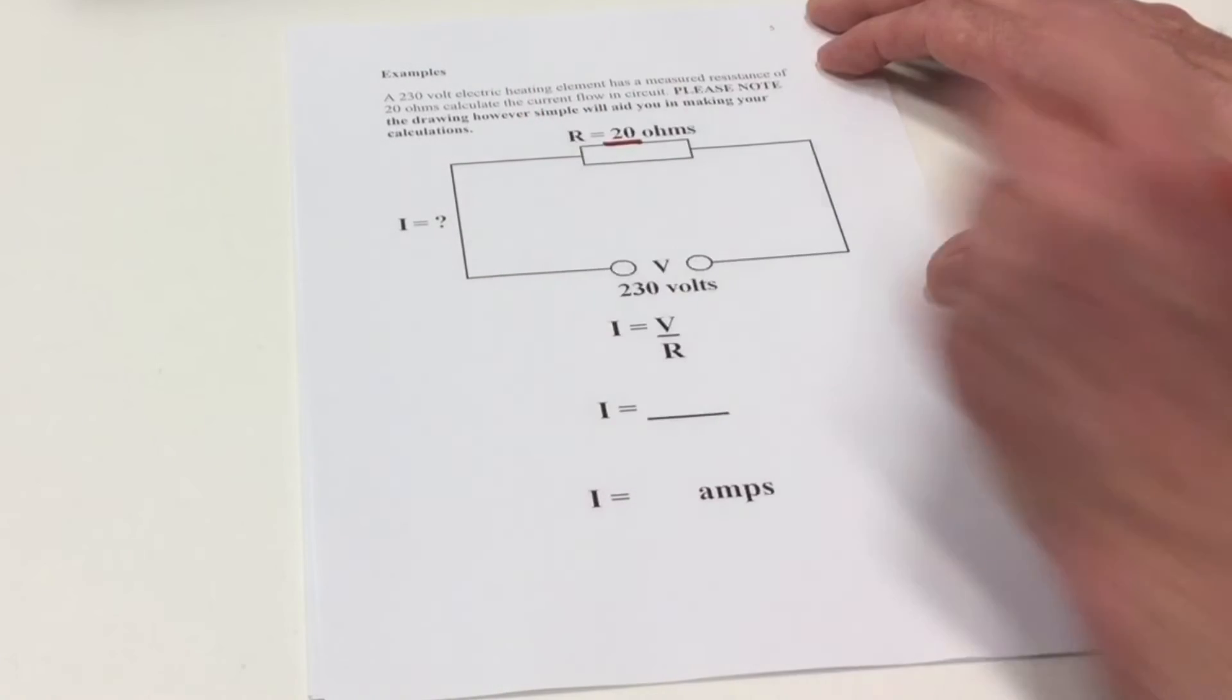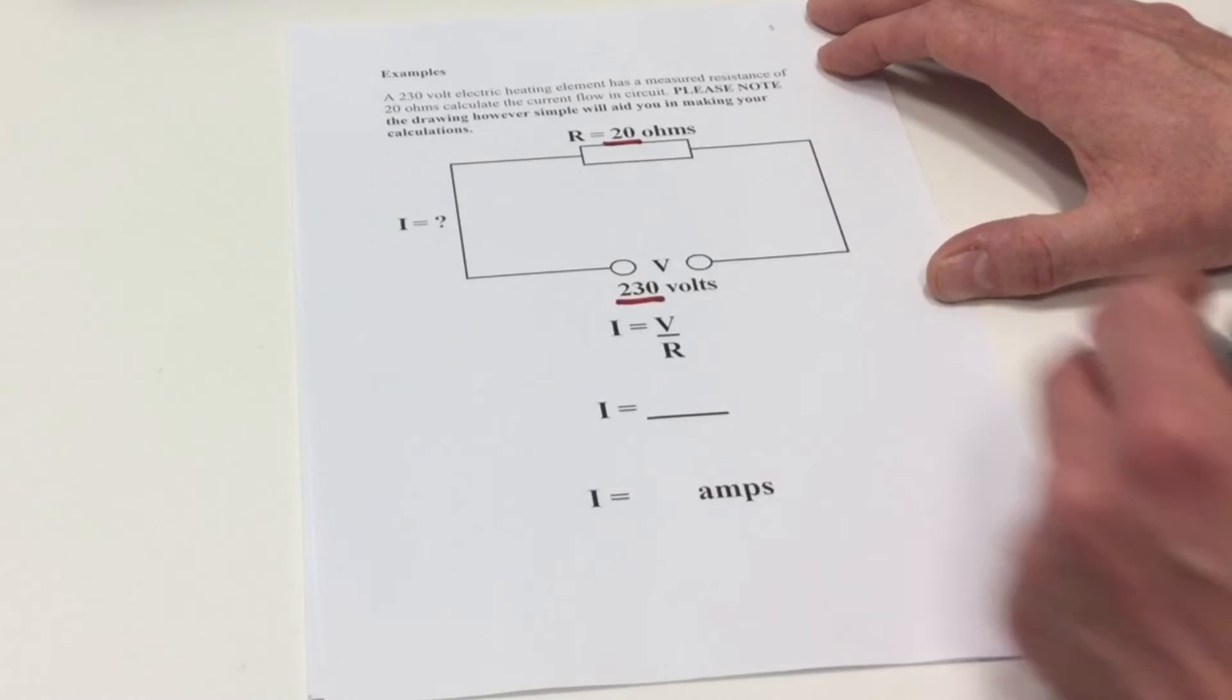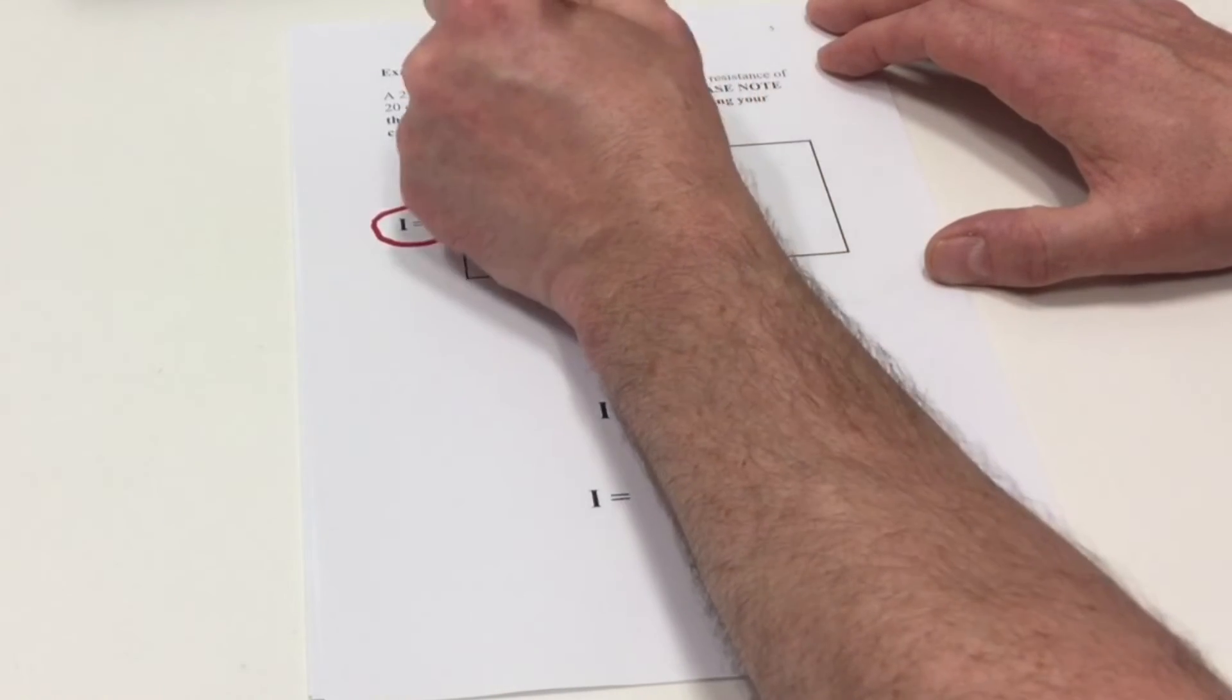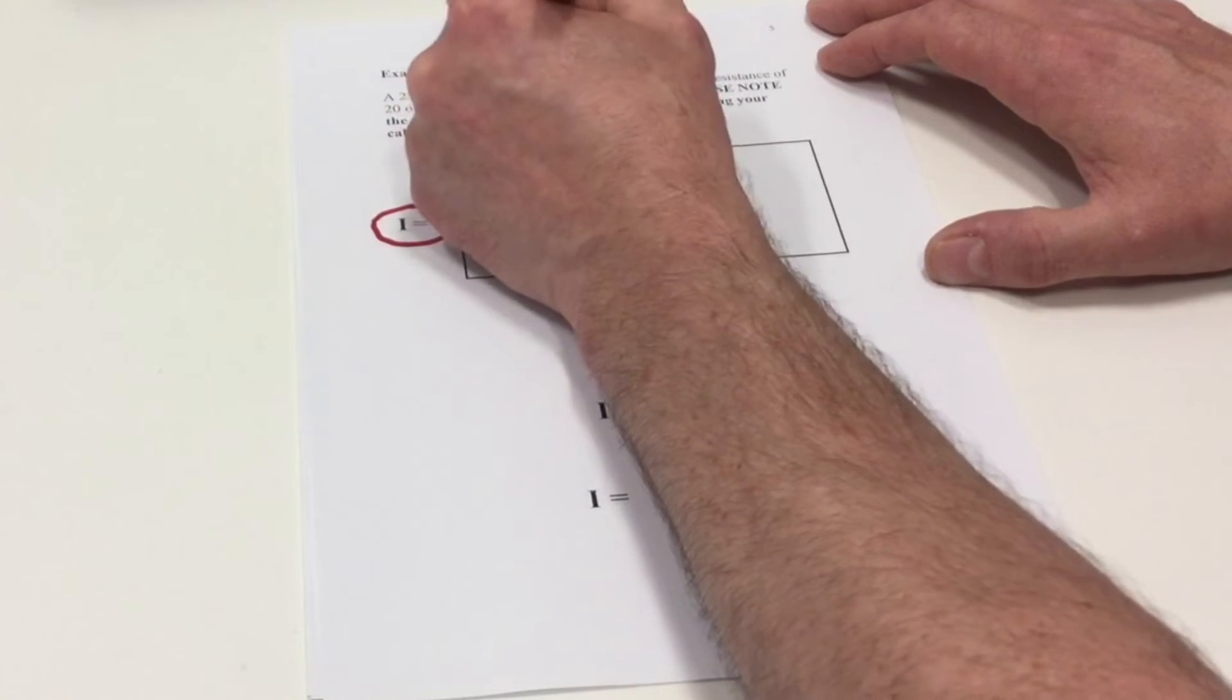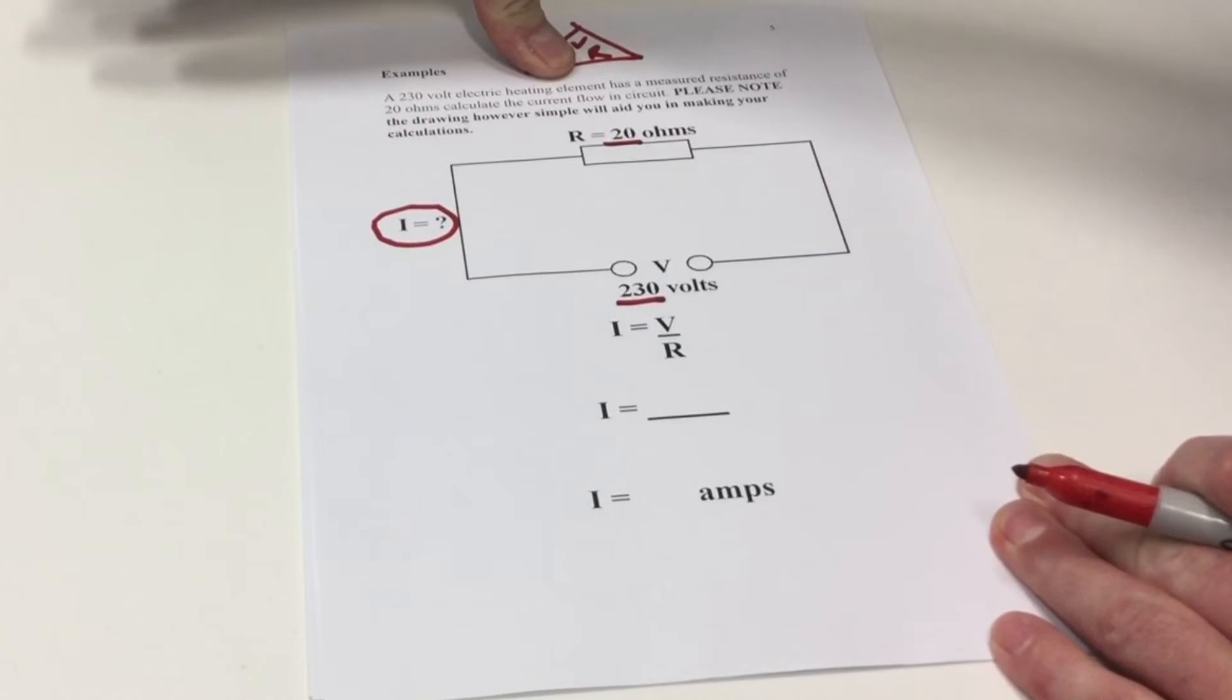So this time we've got resistance of 20 Ohms, a voltage of 230 volts and we're due to find the current. Again, we could use our triangle V, I and R. Cover over I to be left with voltage divided by resistance.